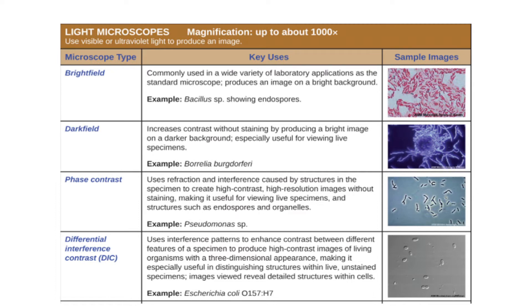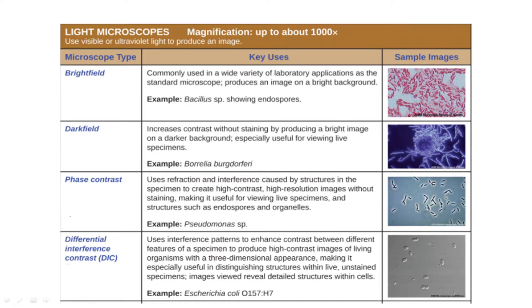First was the Brightfield Microscope. What was important for it? First, we have to section the specimen. After sectioning, we have to do staining. After staining, we have to visualize it. After sectioning and staining, our specimen will not be alive — it would be dead.